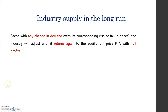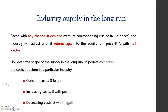We know that if the industry faces any change in demand, and correspondingly there is a rise or fall in prices, the industry will adjust until it returns again to the equilibrium price with no profits, because in the long run we have no profits in equilibrium.